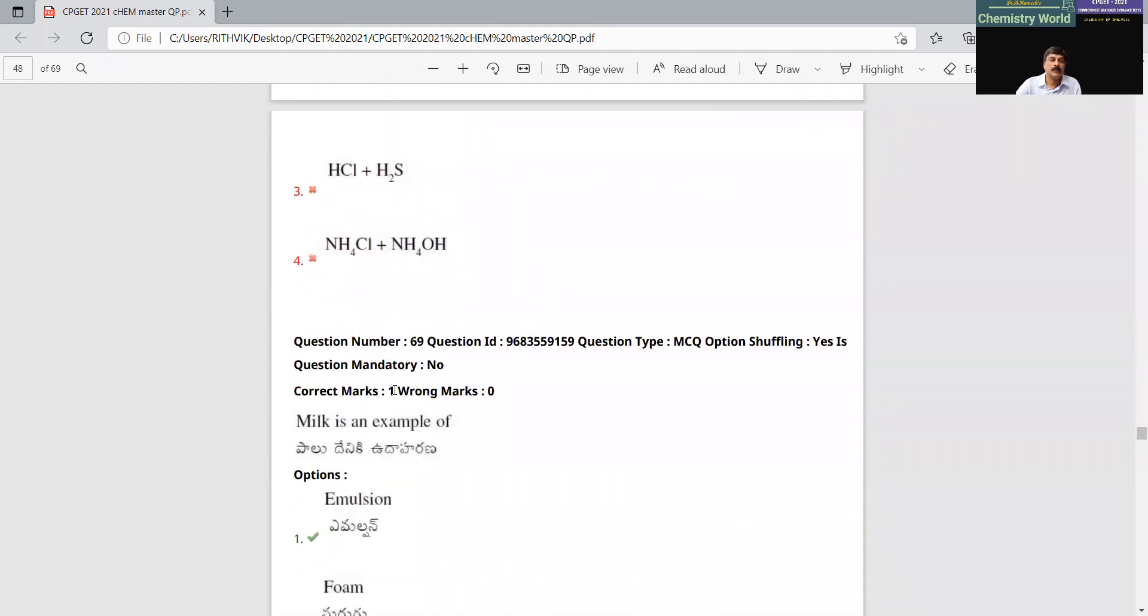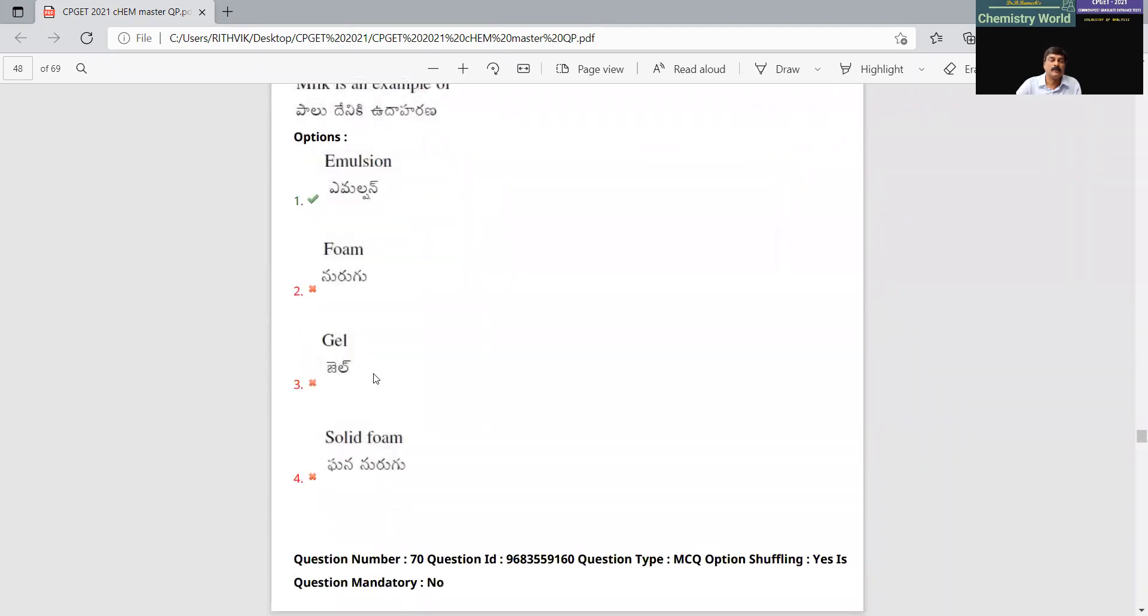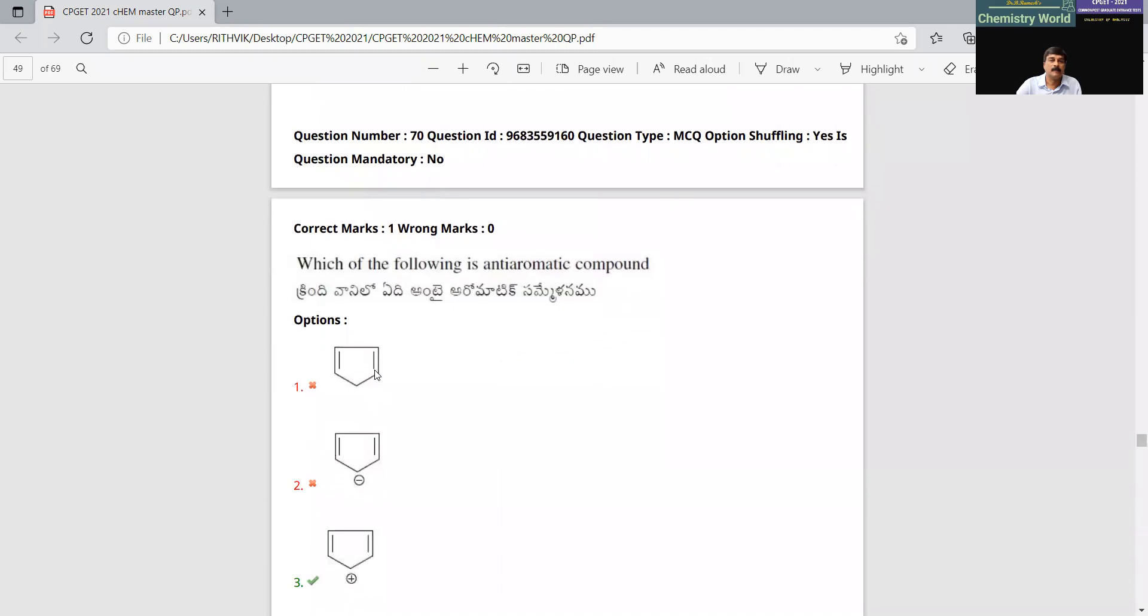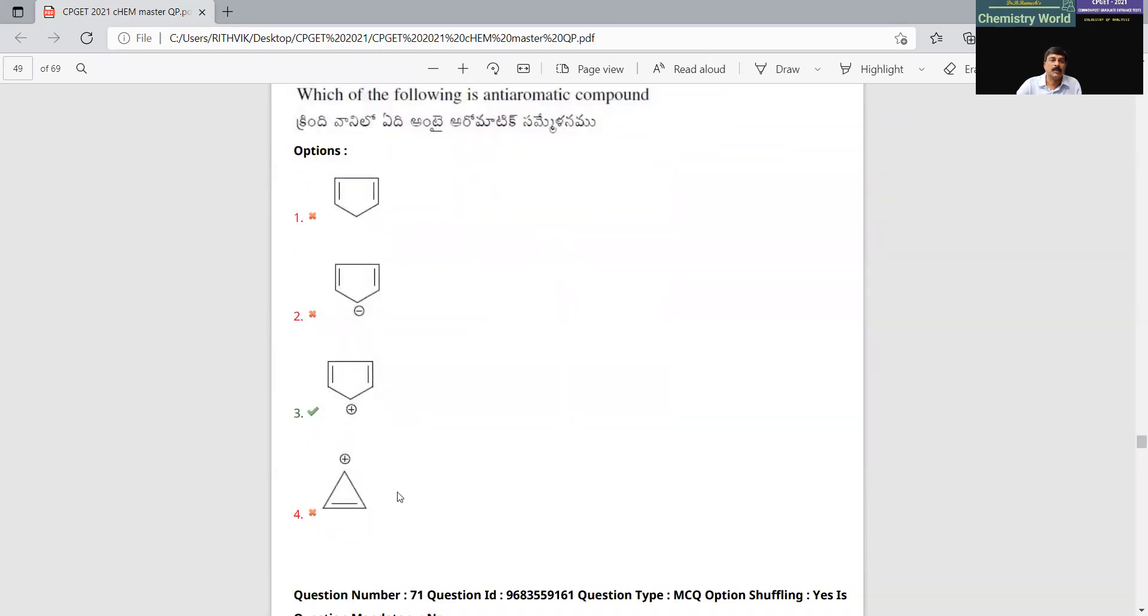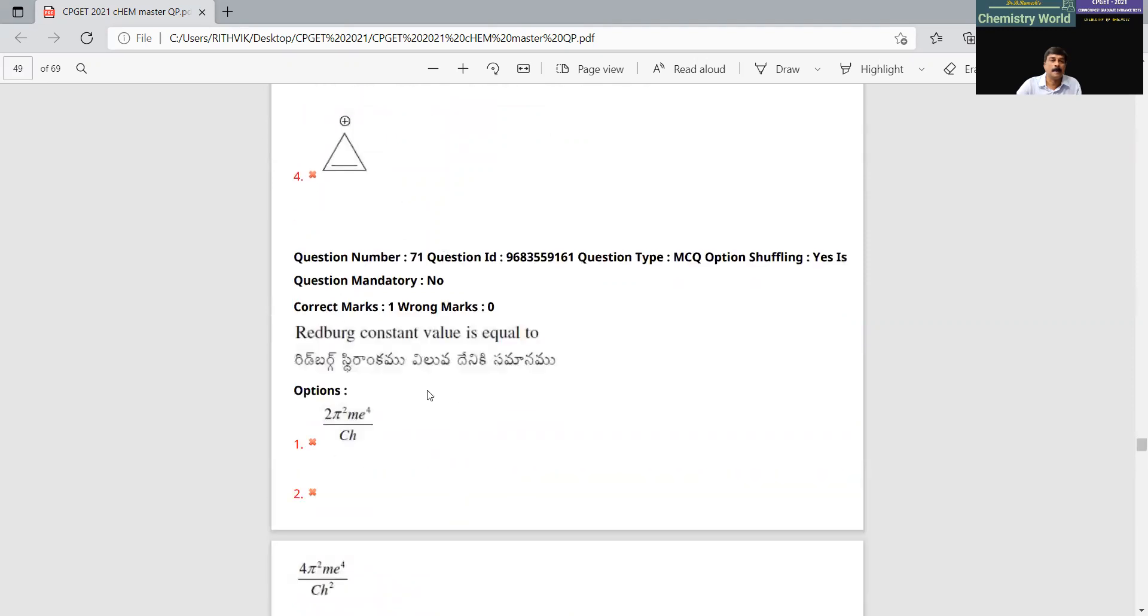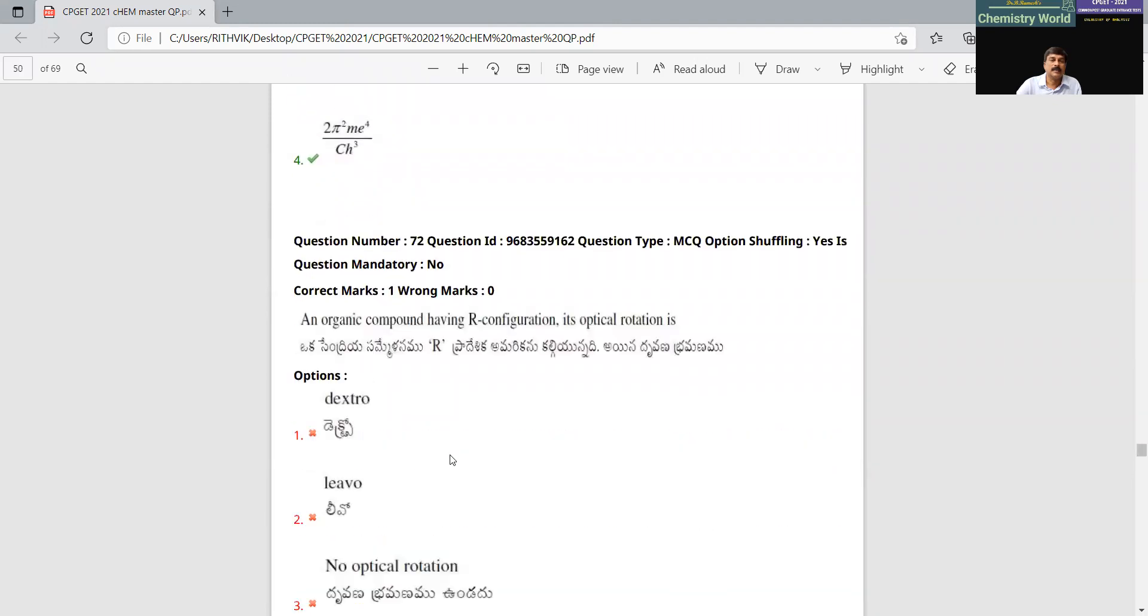This is a direct question. Then, milk is an emulsion, again direct question. Anti-aromatic, again direct. Anti-aromatic, aromatic, aromatic, this is non-aromatic. Direct question, this is right.